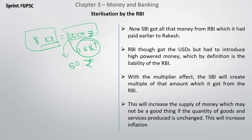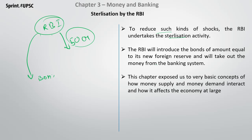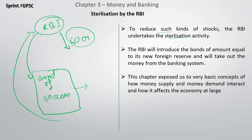RBI uses sterilization. With the multiplier effect, banks will create multiples of that amount, so money supply will increase significantly. To reduce this shock, RBI will do sterilization — RBI will sell bonds worth 50 crore back into the market. This means the amount of money will decrease. RBI buys a bond from the 50 crore market, reducing the money supply. This process is known as sterilization.